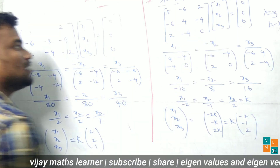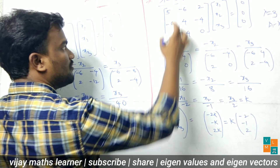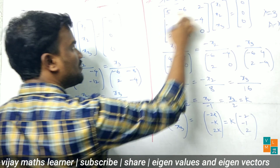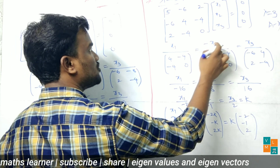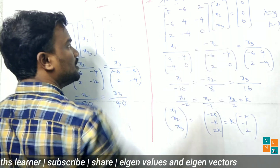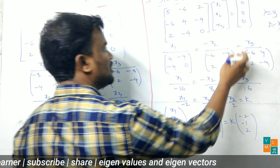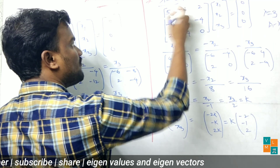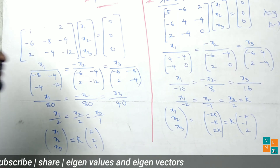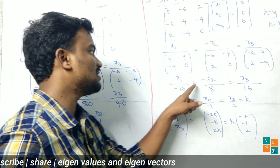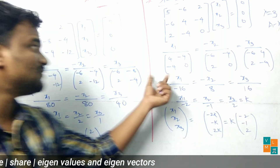Applying the cross-ratio method: x1 by sub-matrix (omit first column and row) — entries 4, -4, -4, 0 — determinant gives minus 16. Minus x2 by sub-matrix (omit second column, first row) — entries -6, -4, 2, 0 — determinant gives 8. x3 by sub-matrix (omit third column, first row) — entries -6, 4, 2, -4 — determinant gives 16. So x1 by minus 16 equals minus x2 by 8 equals x3 by 16, simplifying to x1 by minus 2 equals x2 by minus 1 equals x3 by 2.